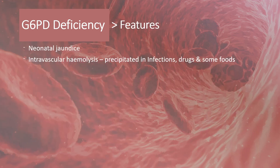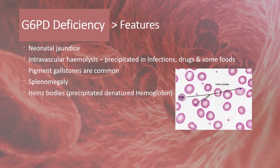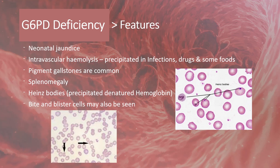Getting back to features: pigment gallstones are common in many patients, and splenomegaly may also be present. On peripheral blood film with supravital staining, Heinz bodies in red cells — representing precipitated denatured hemoglobin — are seen. Bite and blister cells may also be seen on blood films.